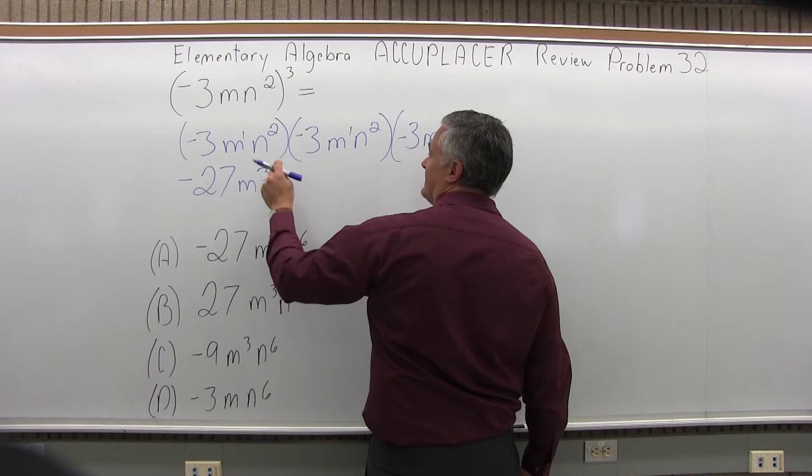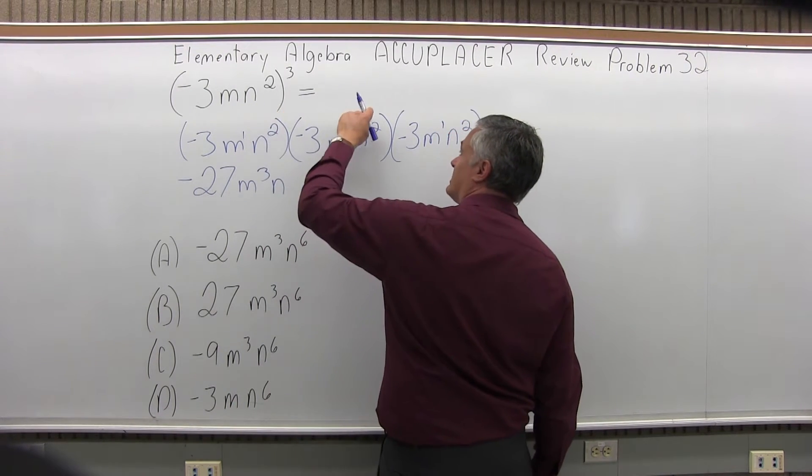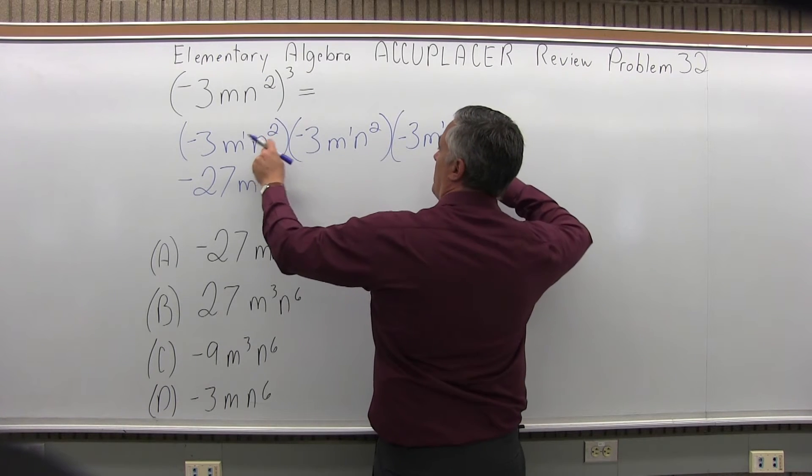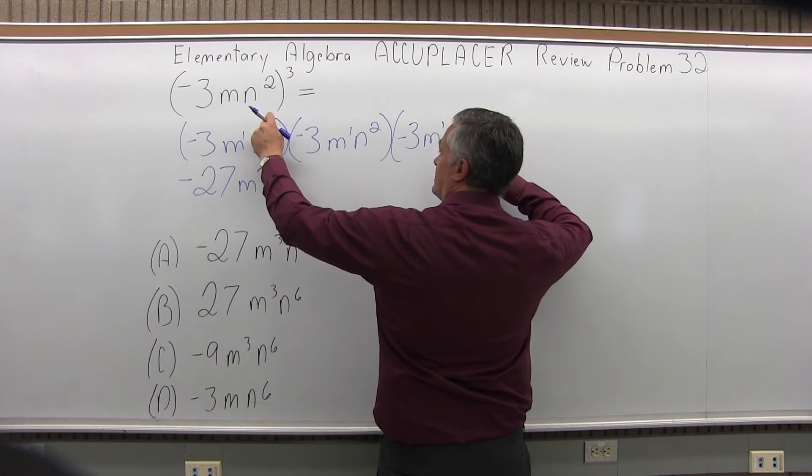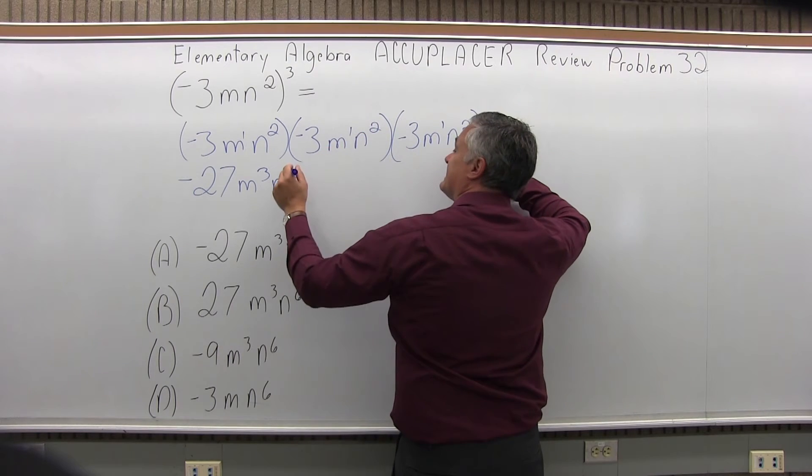And then for the n's, same process, I'm going to do second power, second power, second power. When I'm multiplying, I'm going to add those exponents. 2 plus 2 is 4, plus 2 again is 6.